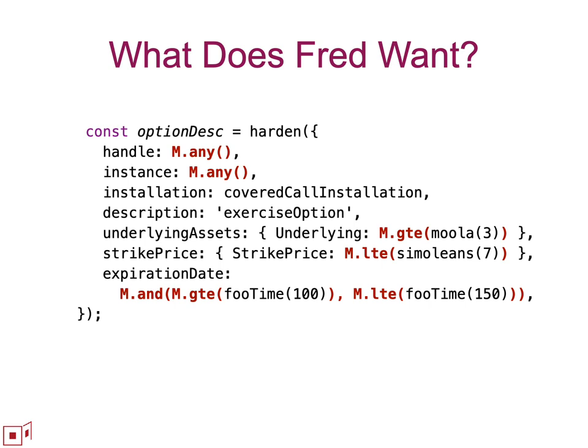We've introduced a pattern language where Fred can express that he doesn't care what particular instance of the option contract he's interested in — that's why the M.any is here. He puts M.any to say any particular invitation, any particular instance of the covered call contract is fine, as long as the contract itself is an instantiation of this concrete covered call code, which is the installation. With regard to the underlying assets, the one he's trying to get an option for, instead of saying 'I want to buy exactly three M.O.L.A.,' he's saying 'I want any amount of M.O.L.A. that's greater than or equal to three.'